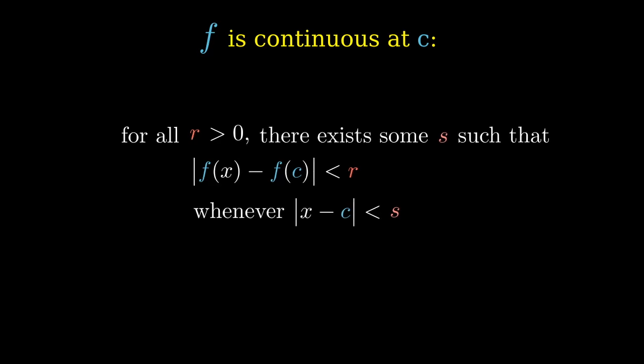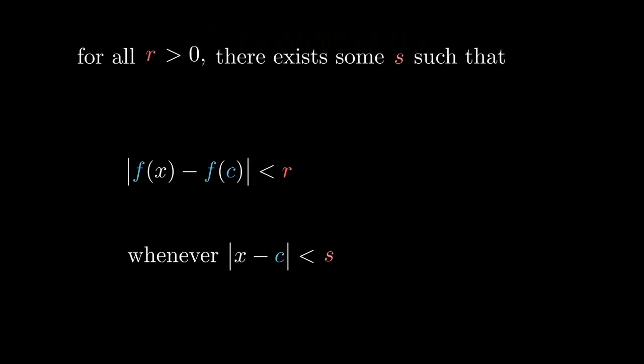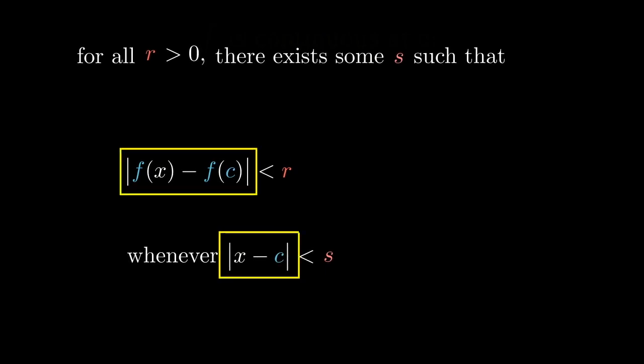Let's look a little deeper into this idea. As it stands, the definition relies on the absolute value of the difference between two numbers, which we use as our definition of the distance between them. The definition would not make sense if we didn't already know what it means to subtract two numbers and to take the absolute value of the result.